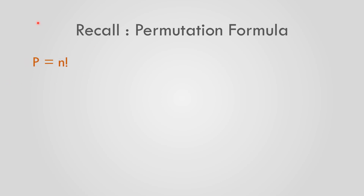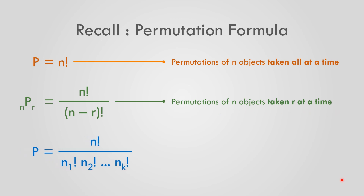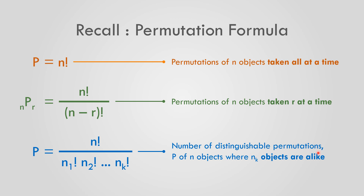Let us recall the different permutation formulas. First, P is equal to n factorial when permuting n objects taking all at a time. The permutation of n objects taking r at a time is equal to n factorial over the quantity n minus r factorial. And P equals n factorial over n₁ factorial times n₂ factorial and so on through nₖ factorial, for the number of distinguishable permutations of n objects where nₖ objects are alike or identical.